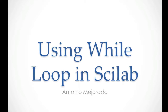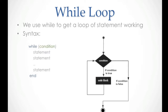Hi, this is Antonio Mejorado and this tutorial is to understand a little about the while loop in Scilab. A while loop is used to repeat several statements with a condition. While the condition is true, we can get into the loop. We use 'while', then the condition, and all statements should be inside. The condition is the same that we use in an if. Every statement should be inside, and 'end' defines the end of the loop. It returns to the condition every time to check.